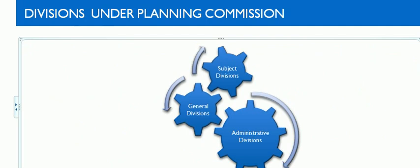The next topic is divisions under the planning commission. There are three divisions under the planning commission as we can see on the slide: administrative division, general divisions, and subject divisions.